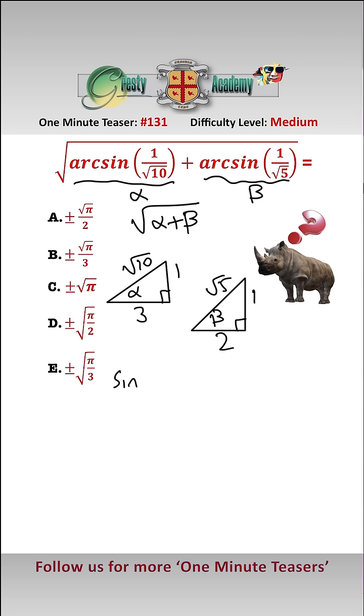Now let's have a look at sine of alpha plus beta. Well that equals sin(α)cos(β) plus sin(β)cos(α), and we can just read all of these values off the two triangles. That equals 1 over root 10 times 2 over root 5 add...